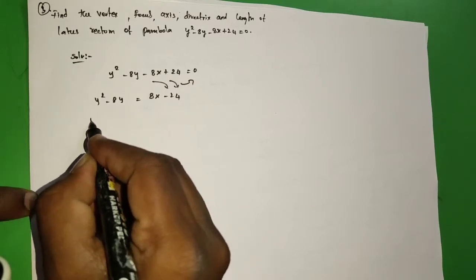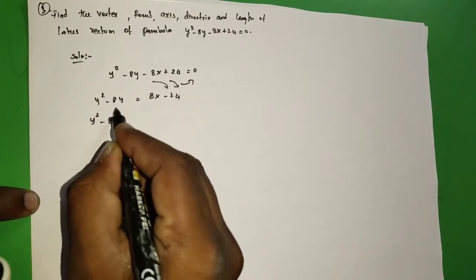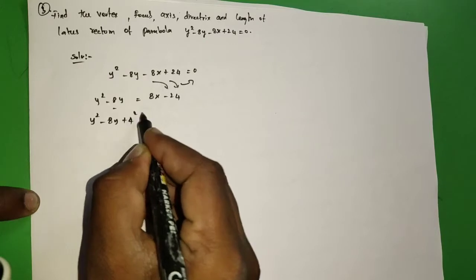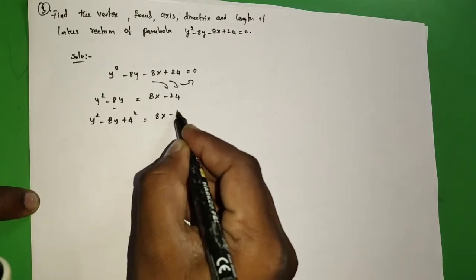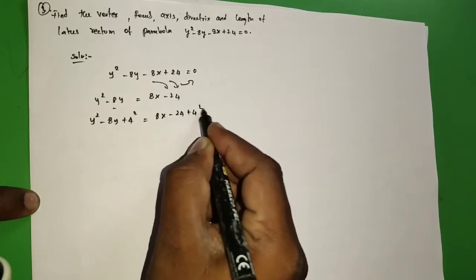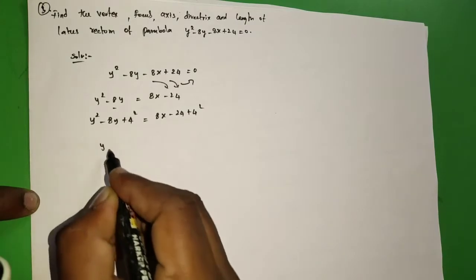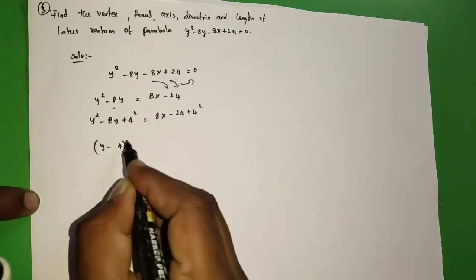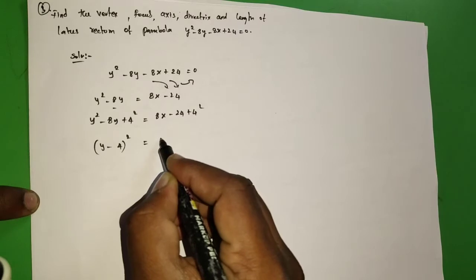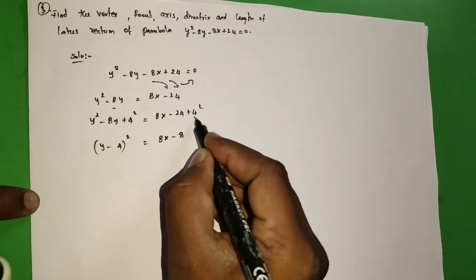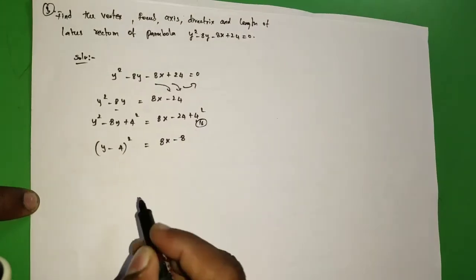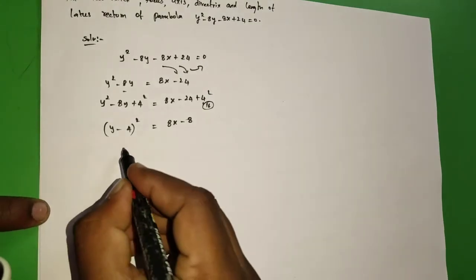Then y² - 8y plus half of the coefficient of y squared. So the coefficient of y is -8, half is -4. -4 squared is 16, so add 16. 8x + 24 + 16.